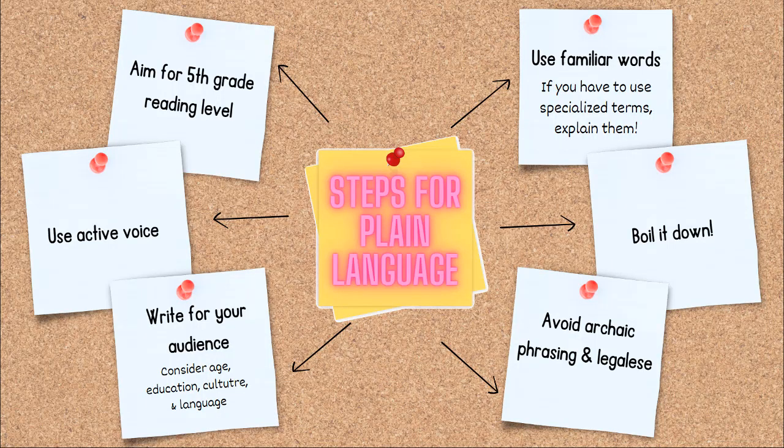Similar to the plainlanguage.gov checklist, here are decisive steps for creating an A to J guided interview in plain language. Three key steps to emphasize: first, aim for a fifth grade reading level — if you target that level, most American adults will be able to understand and work through your interview. Second, boil it down for the end user — forms are long and repetitive, so reducing the content will lower the time someone spends in a stressful situation filling out court forms. Third, write for your audience — consider the user's age, education, culture, and language as you draft your interview content, since user personas will help you develop strong self-represented litigant facing interviews.